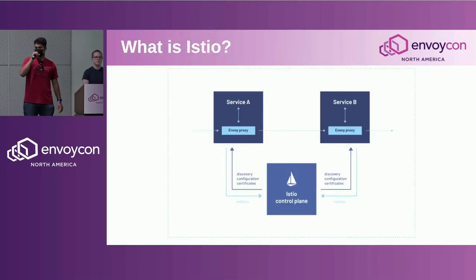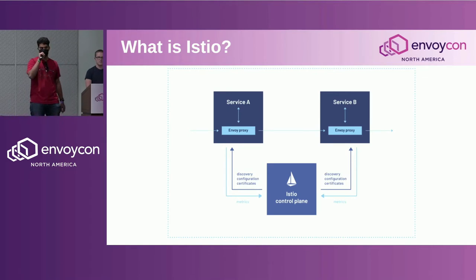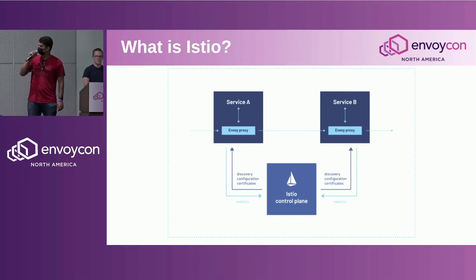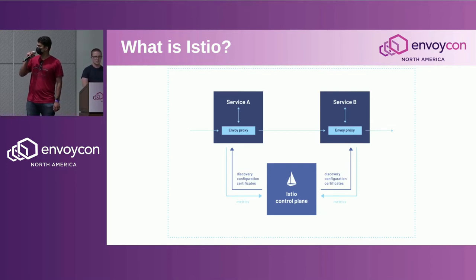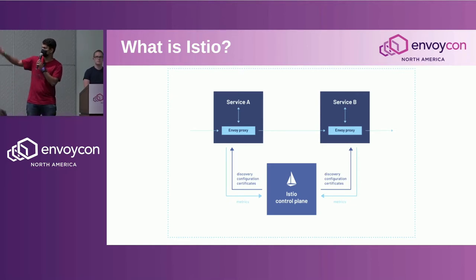First, what is Istio? It is a service mesh that uses Envoy as its backbone — as a sidecar proxy and also as a gateway. Configuration is distributed to the proxies via the control plane over the network. There's a component in the Istio control plane called Pilot which does all the configuration management.